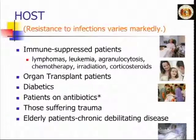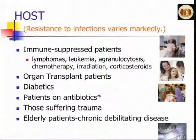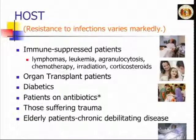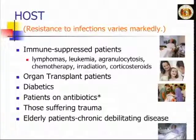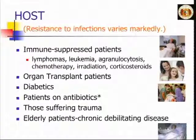In terms of susceptible hosts, all of these types of patients are found in skilled nursing facilities and nursing homes. We have immunosuppressed patients — those with lymphoma, leukemia, agranulocytosis, people receiving chemotherapy or irradiation treatments. We have organ transplant patients, diabetics, and patients on antibiotics. Interestingly, being on an antibiotic actually predisposes you to another type of infection. We also have patients who have suffered trauma, such as a broken hip, coming back to the nursing home. And elderly patients often have chronic debilitating diseases that we have to deal with.